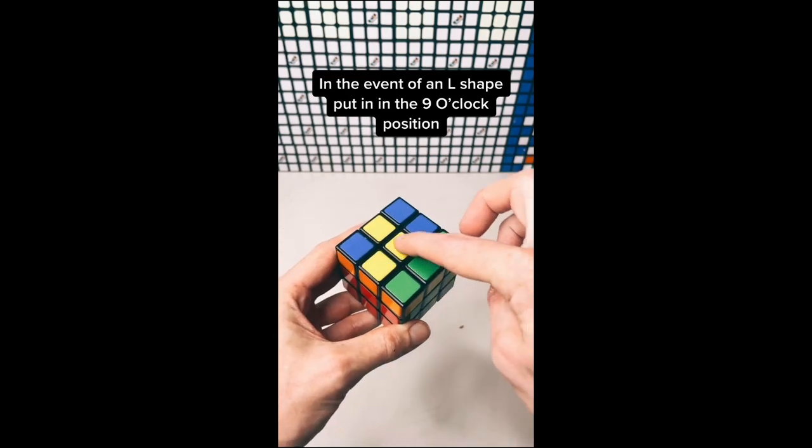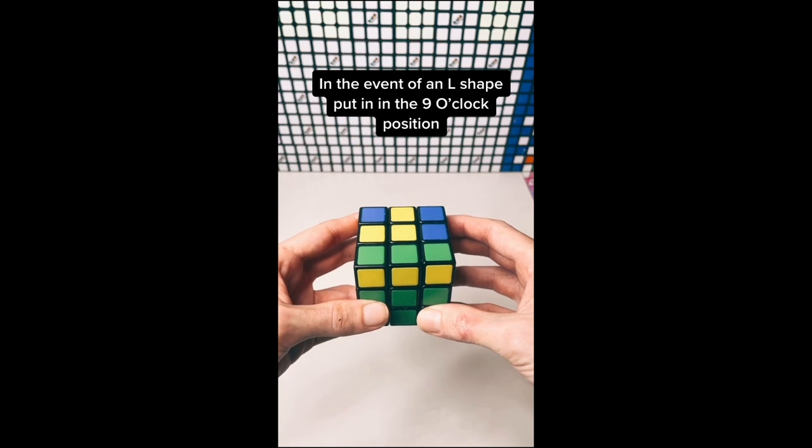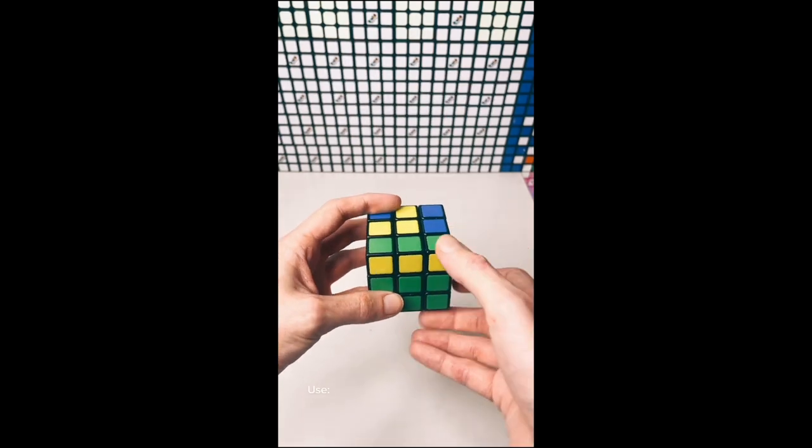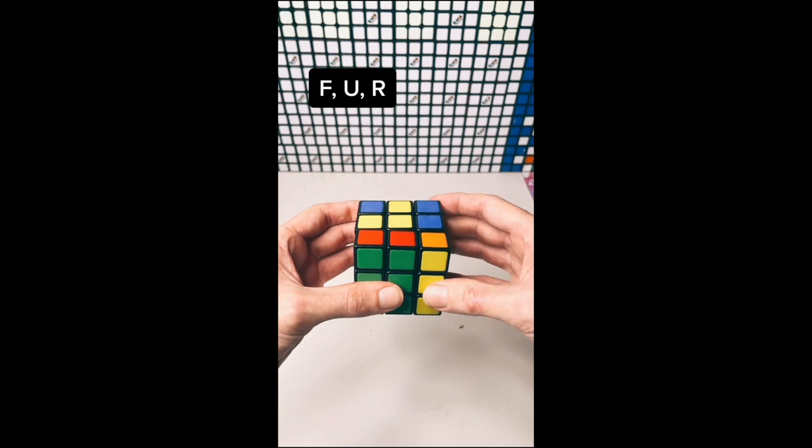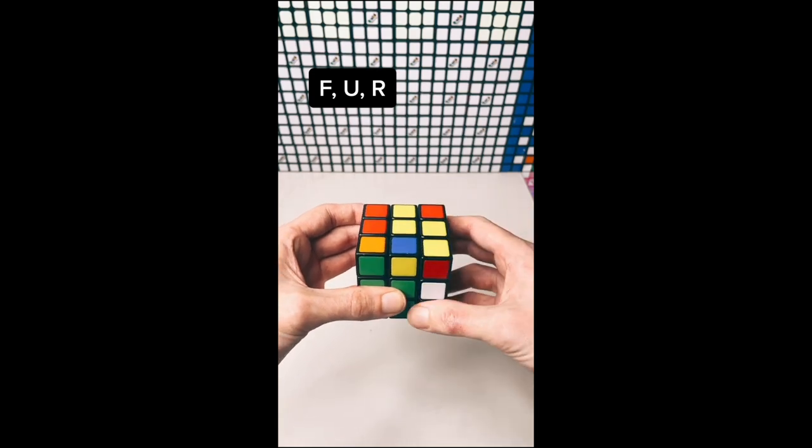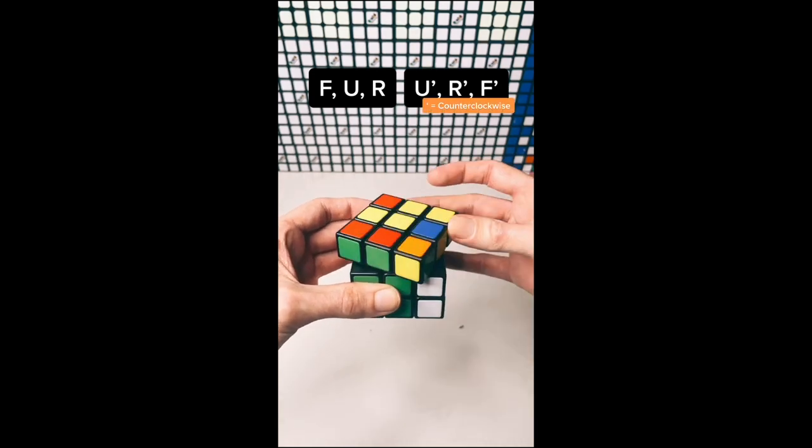In the event of an L shape, put it in the 9 o'clock position. This is your front face. Use F, U, R, U', R', F'.